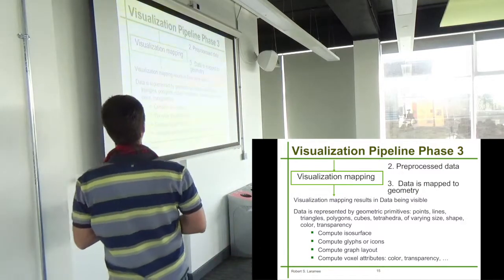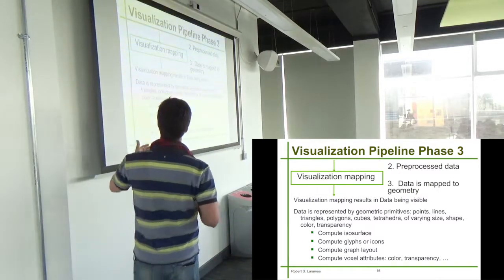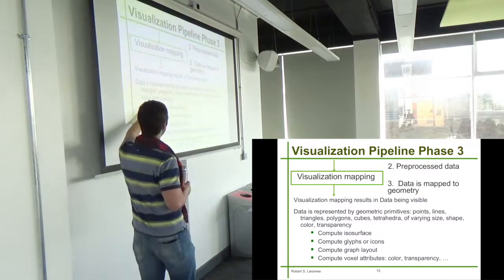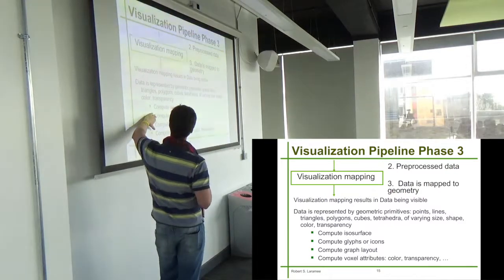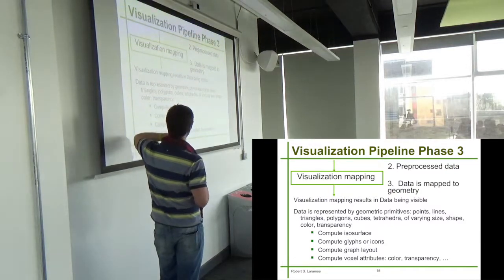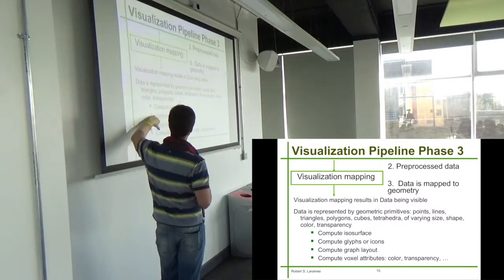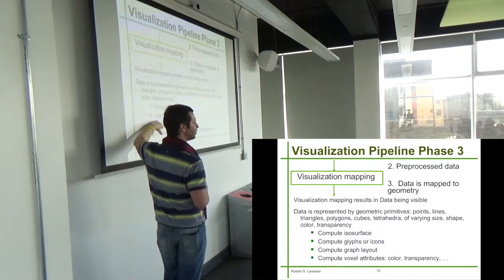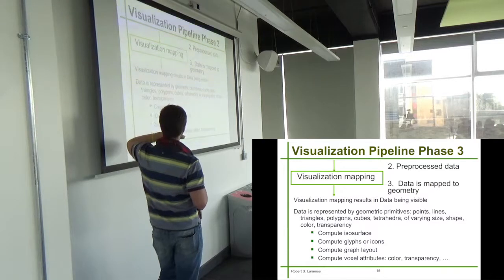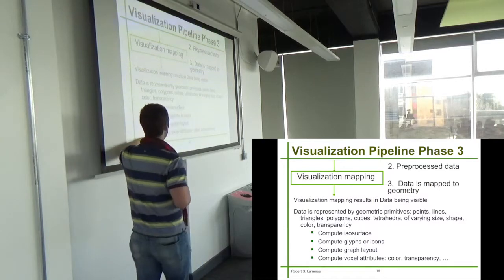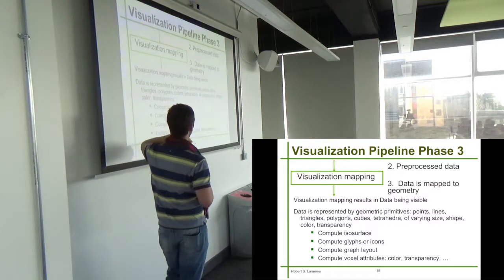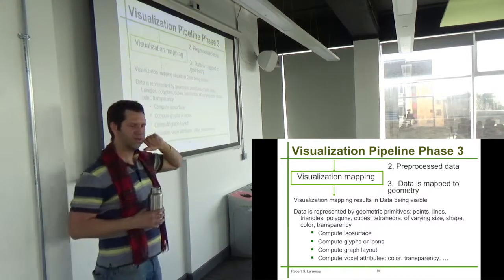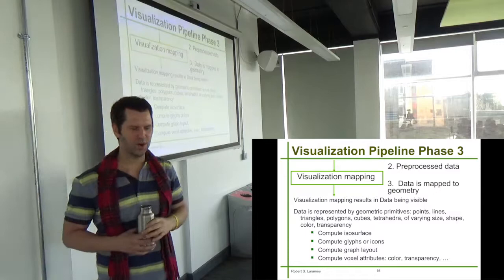Some mappings are complicated. A complicated one is computing an isosurface. Computing glyphs are usually fairly straightforward. Graph layouts can be very complicated. Computing voxel attributes like color and transparency can also be a little bit complicated.